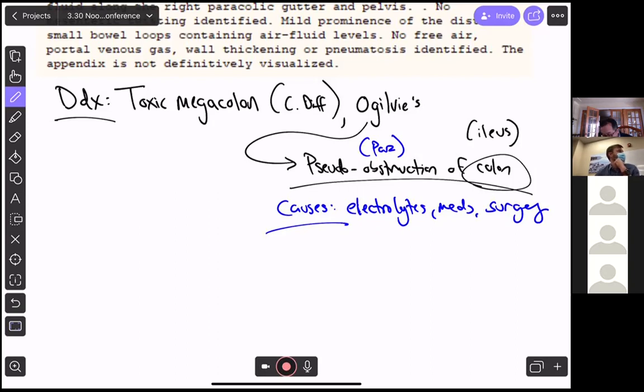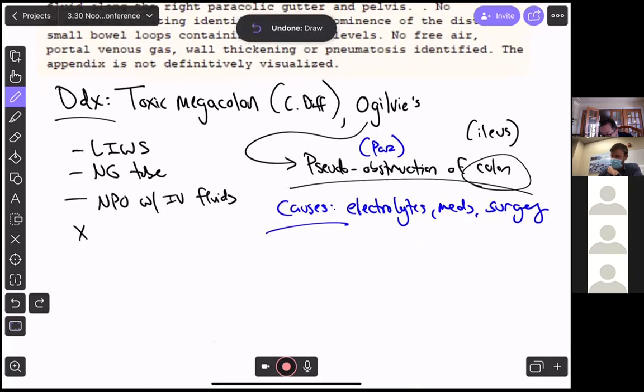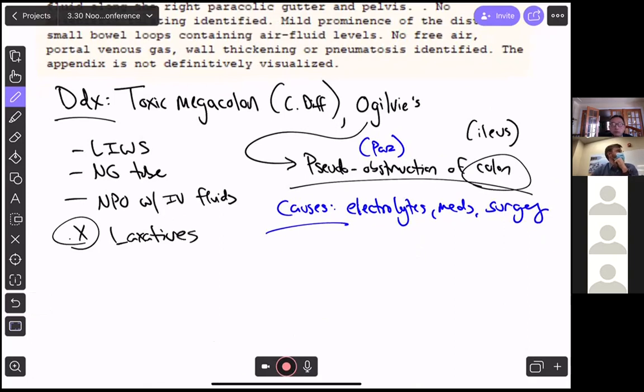So you call surgery, and surgery recommends a few things here. Surgery says, put this person on low intermittent wall suction, so LIWS. They say to do that, you're going to need an NG tube as well. And then NPO with IV fluids, if needed. Why is surgery not recommending a bowel prep, laxatives, things like that? Cool. Yeah. So Danielle says, risk of perforation. And so this is going to be one of those times where you want to avoid laxatives. And so you do not want these people to be sort of contracting, and you risk increasing the risk of perforation. So low intermittent wall suction, NG tube, and NPO, and sort of supportive care and see if they get better.